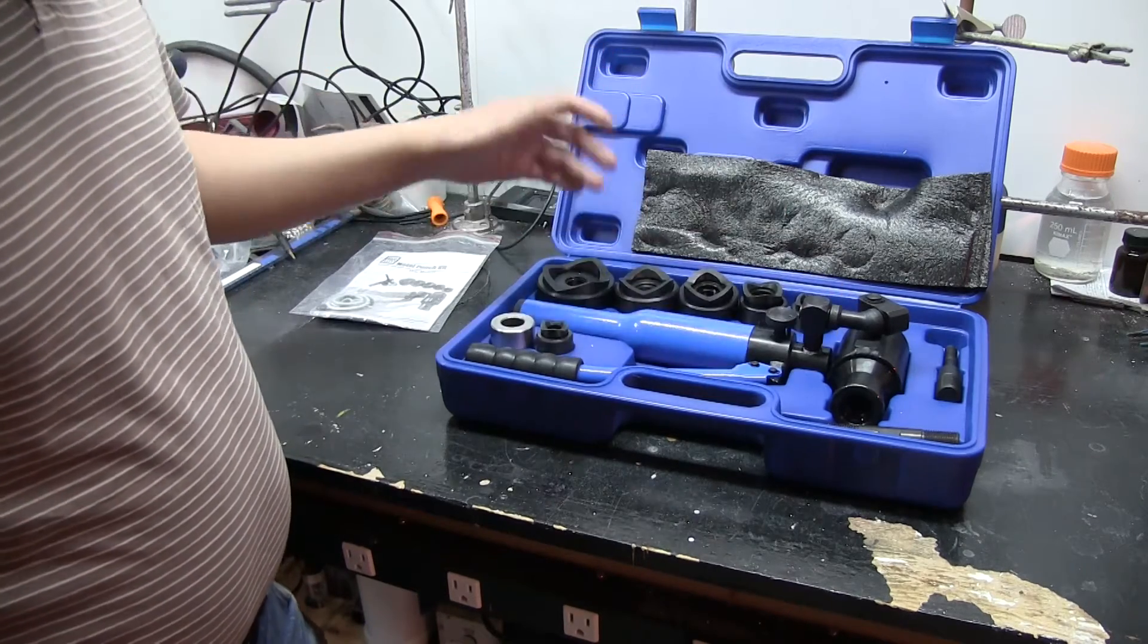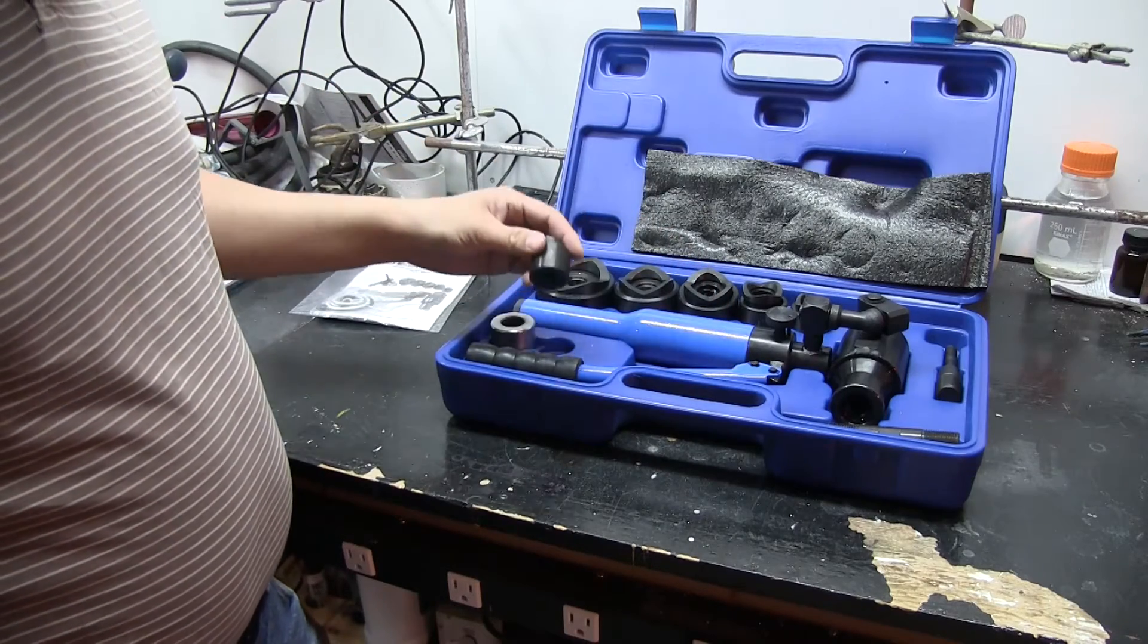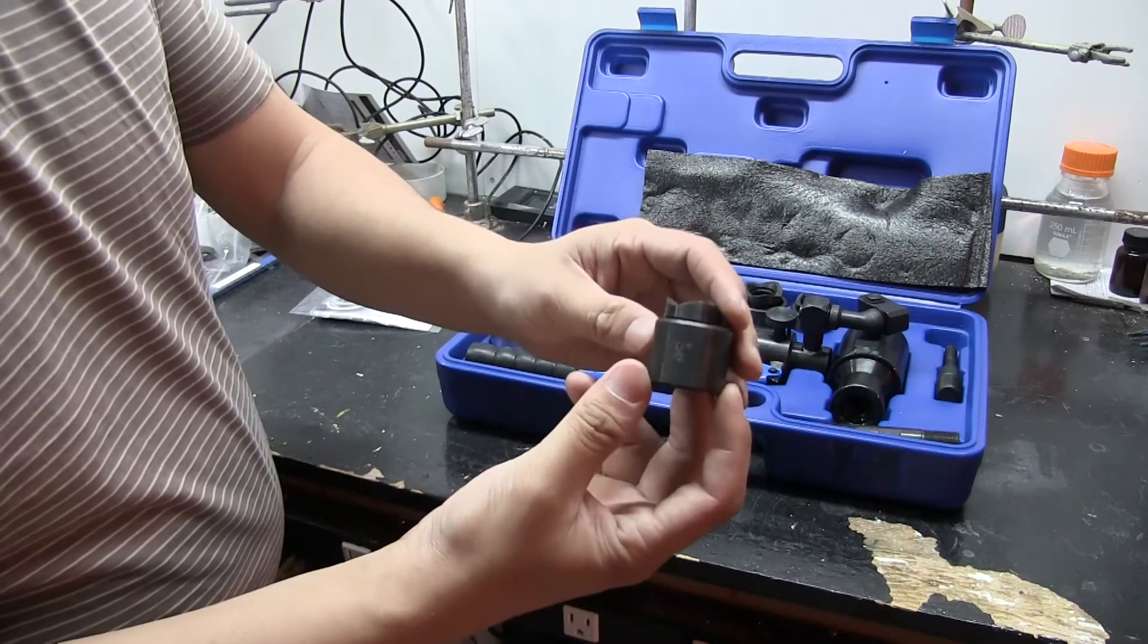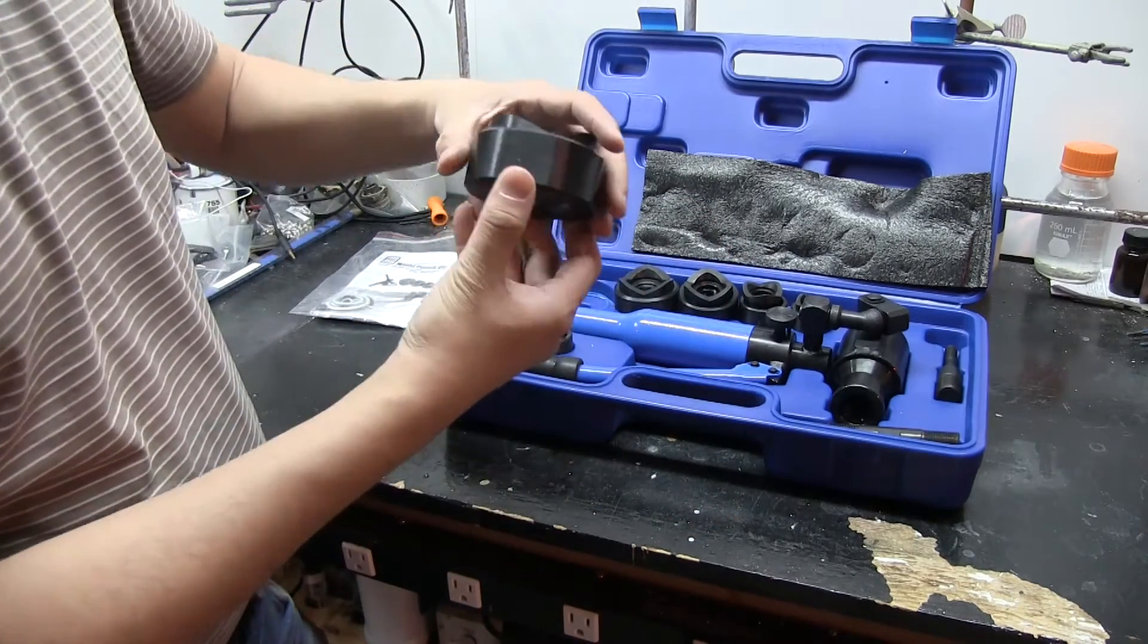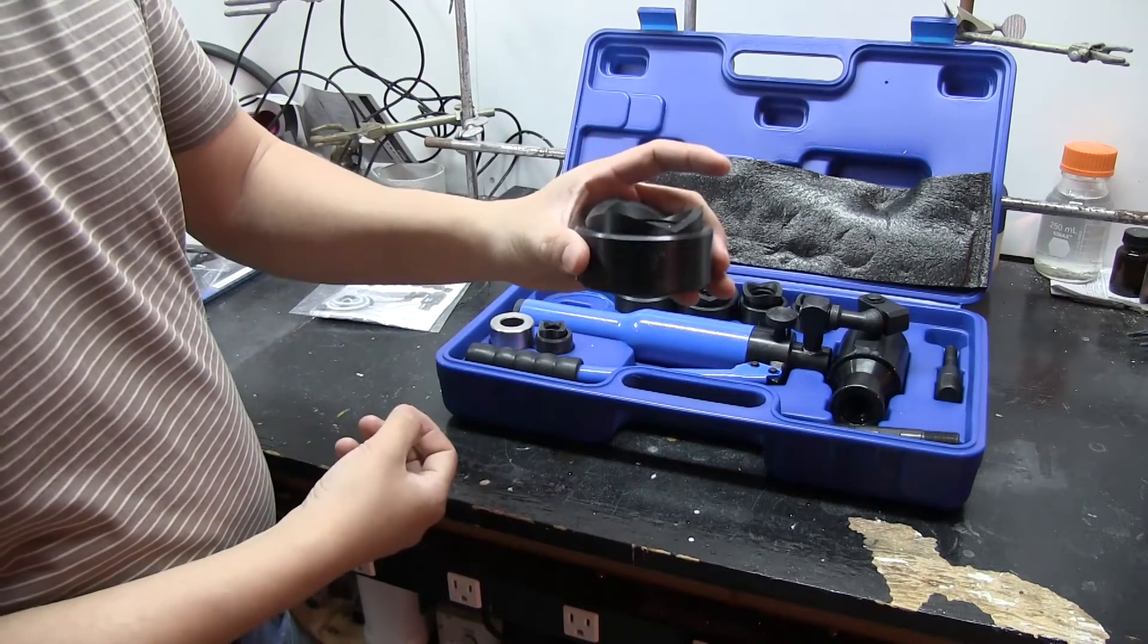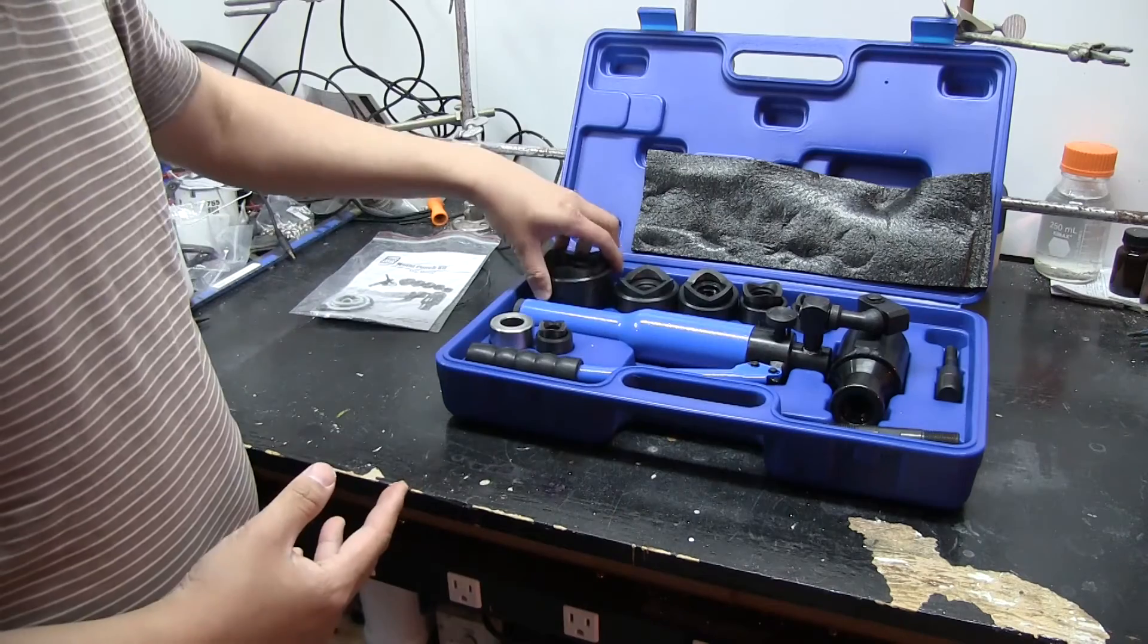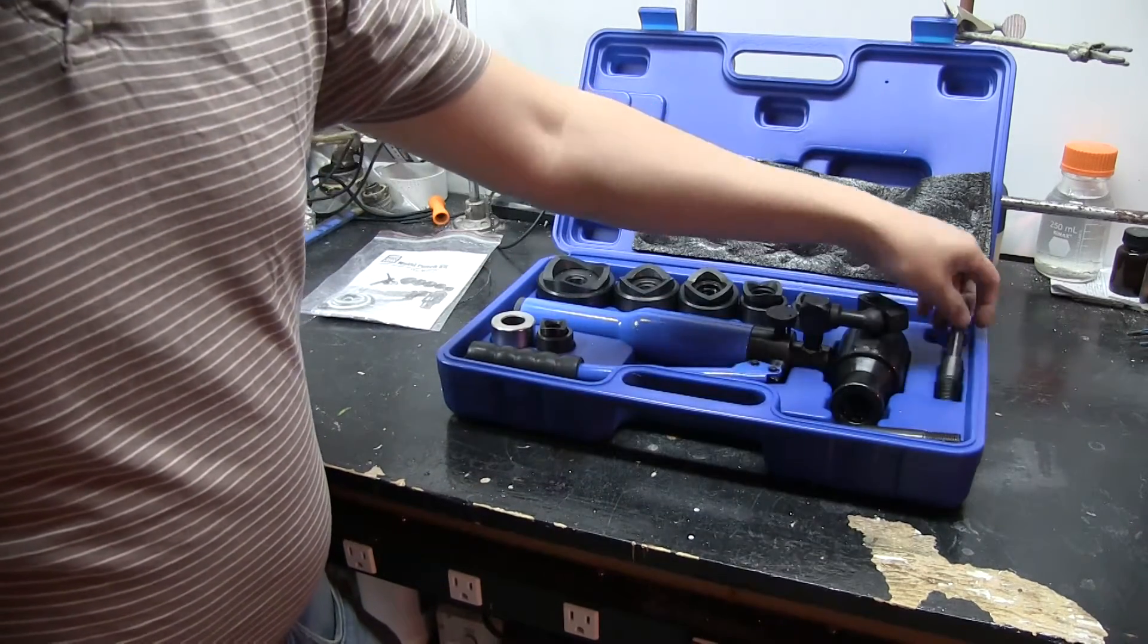So what do you get in the set? You have the actual hydraulic unit, and you have a whole bunch of dies and punches. In this case, you go from half inch all the way up to two inch, if you can see it on camera there. As well as two sized metal draw bars.